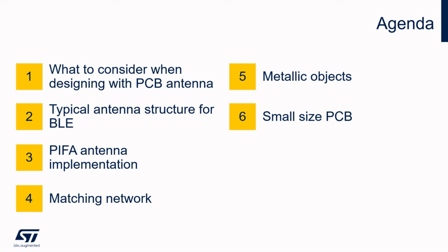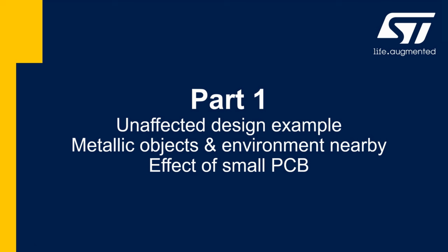Although I have no doubt that there are experienced engineers among you who can do so, another possible way is to use a ceramic antenna, for which similar rules can apply as stated in this guideline. In Part 1, we will cover how to implement an antenna correctly and what to avoid so as not to lose performance. We will focus on metallic objects and environment.